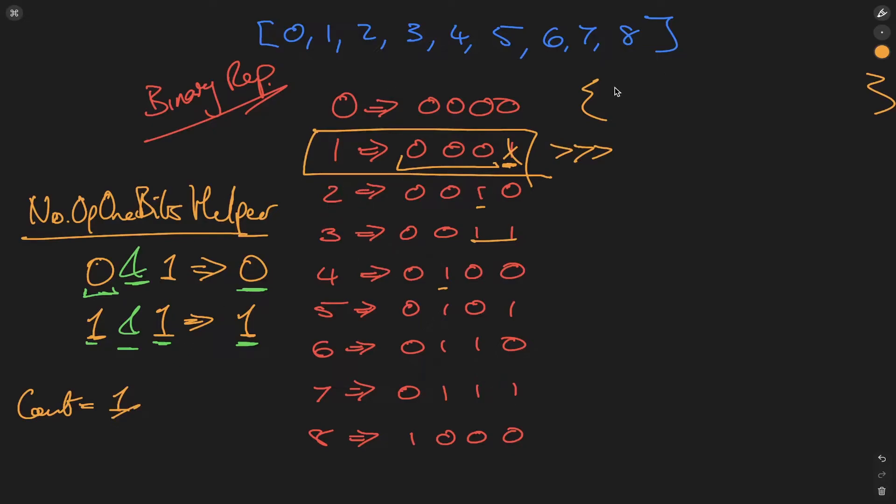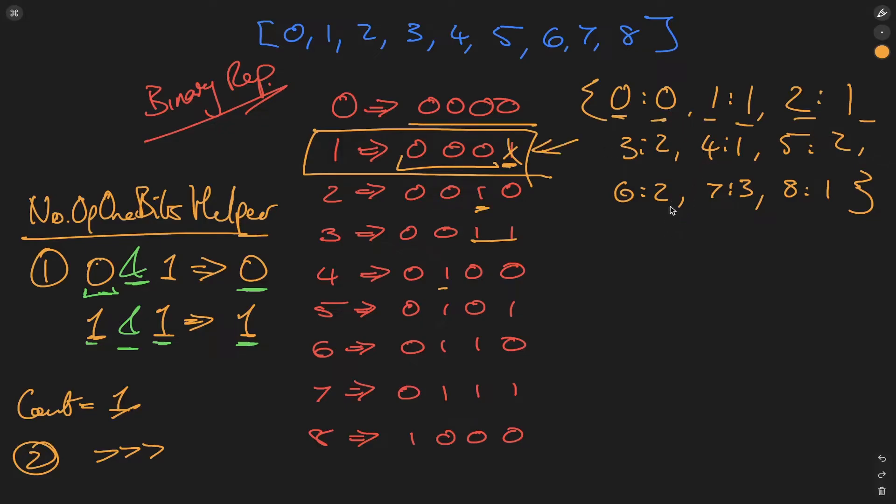At the end of this, within our map, we're going to have something like this. Here we have our mapping of the number of ones to their respective integer. At this point, all that's left to do is to sort this array based on the information we've accumulated. We'll be using the inbuilt sort method to help us with that. Let's dive into the code and see how this is implemented.